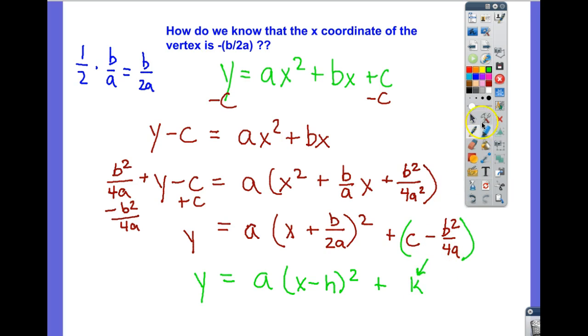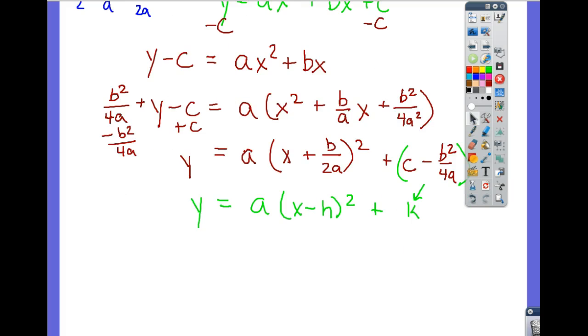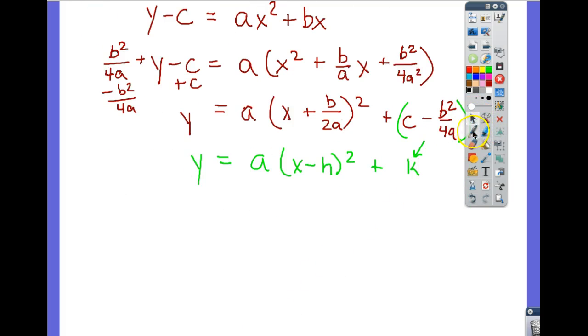So if we look, we can see, since we know that our vertex is the opposite of h, k, then we know that our vertex here, the opposite of positive b over 2a, will be negative b over 2a. So that's the important part. If you wanted to go a step further, you could. k will always be c minus b squared over 4a.